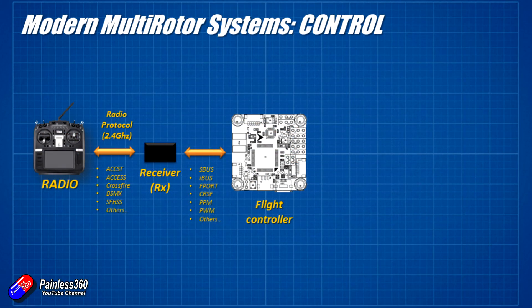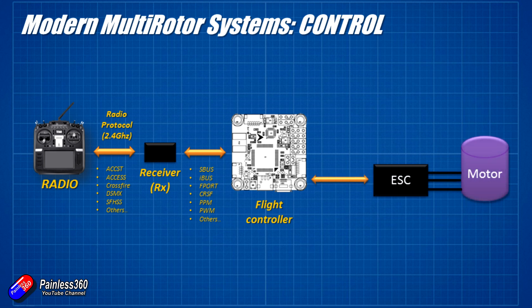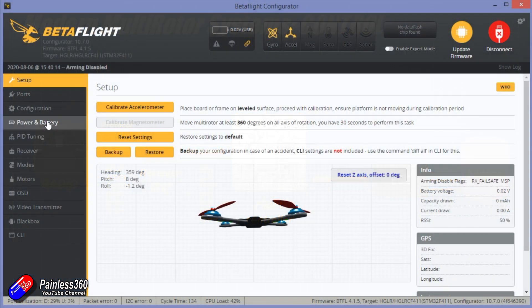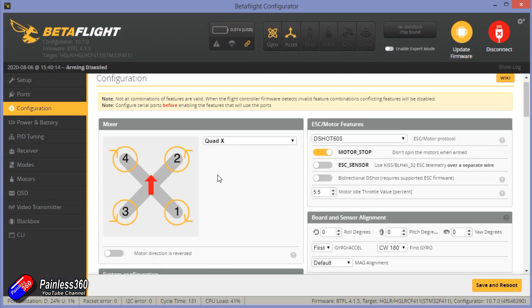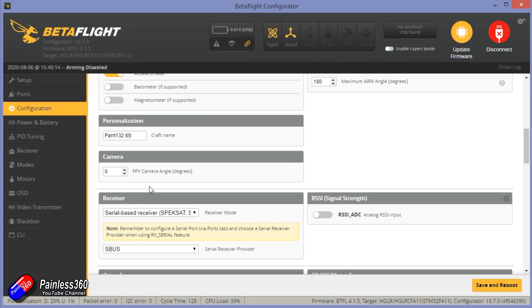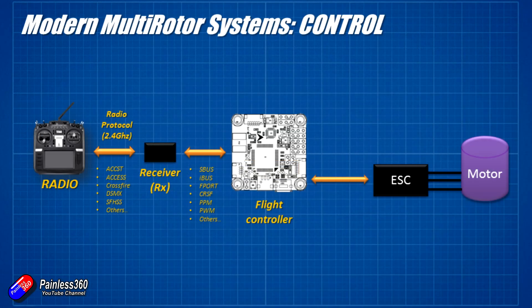The flight controller runs software like Betaflight, which listens to all of the control inputs — throttle, elevator, aileron, rudder, your mode switch, your arming switch, or however you've got it set up — and then makes the quadcopter fly. It does this by directly controlling each of the four individual motors, making them spin faster or slower to make the quadcopter rotate or flip over in any axis that you want.